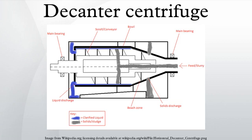The operating principle of a decanter centrifuge is based on separation via buoyancy. Naturally, a component with a higher density would fall to the bottom of a mixture, while the less dense component would be suspended above it. A decanter centrifuge increases the rate of settling through the use of continuous rotation, producing a force equivalent to between 1000 to 4000 g's.